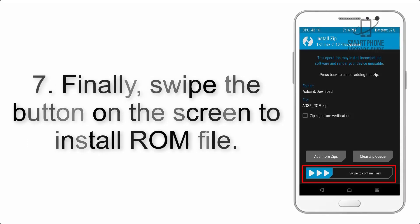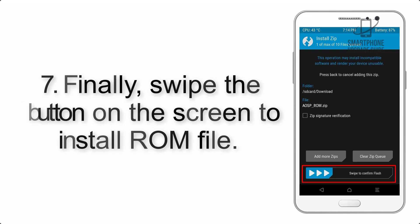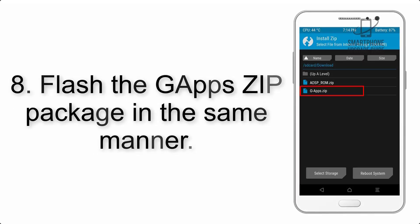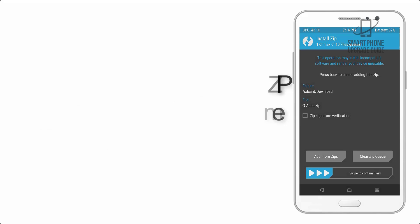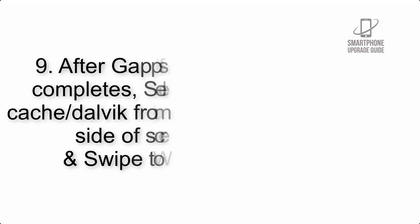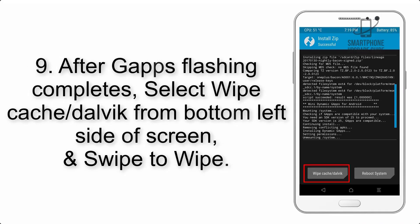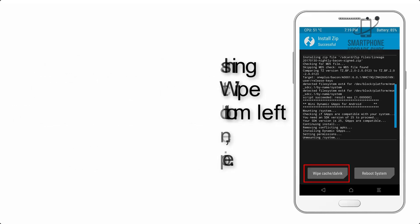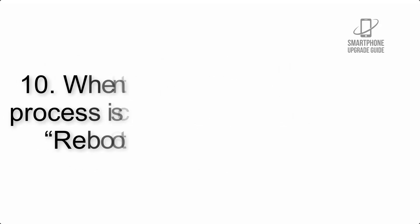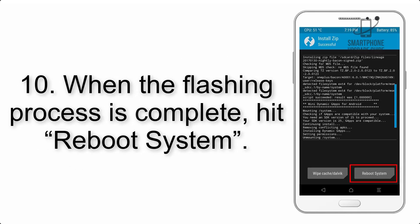Step 7: Swipe the button on the screen to install the ROM file. Step 8: Flash the GApps zip package in the same manner. Step 9: After GApps flashing completes, select Wipe Cache and Dalvik from the bottom left side of the screen and swipe to wipe.